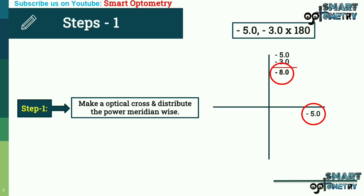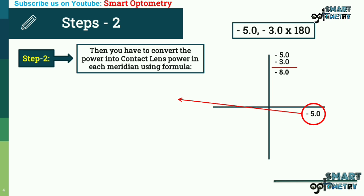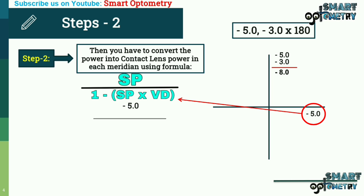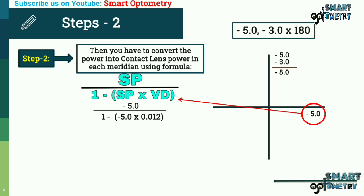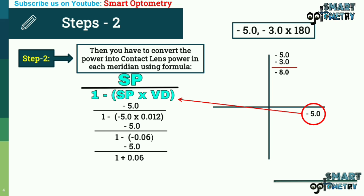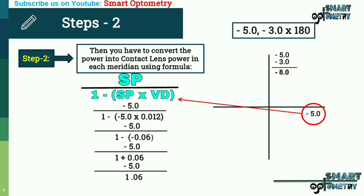Now Step 2: converting spectacle power minus 5 into contact lens power using the formula SP divided by (1 minus SP multiplied by VD). This becomes minus 5 divided by (1 minus minus 0.012), since the most common vertex distance is 12 mm, which equals 0.012 meters. That simplifies to minus 5 divided by (1 plus 0.06), equaling approximately minus 4.716, rounded to minus 4.75 diopters.